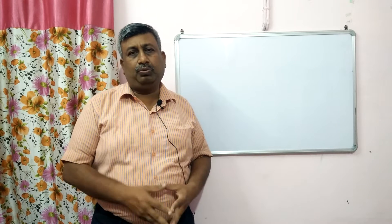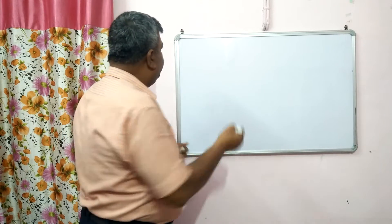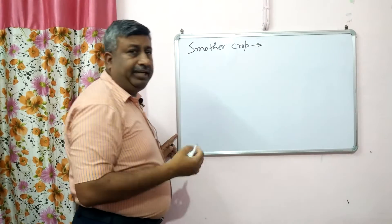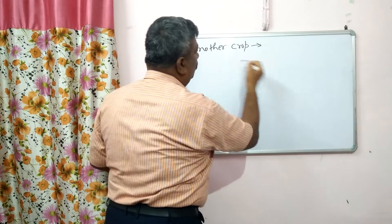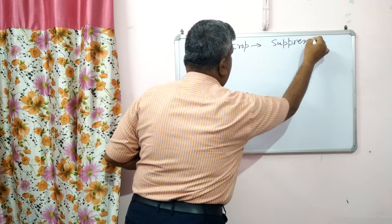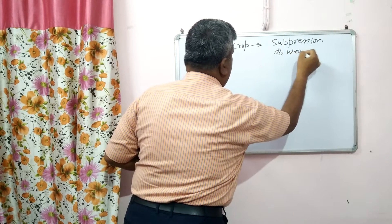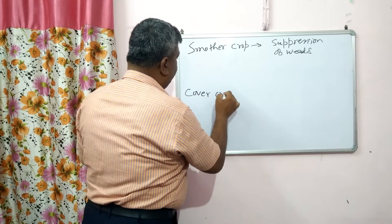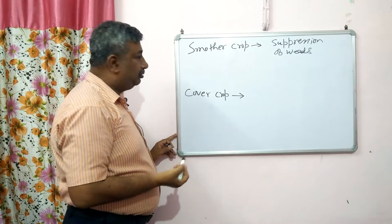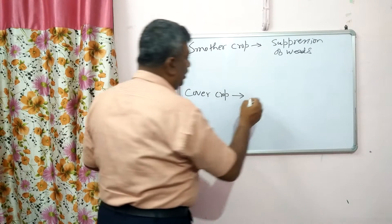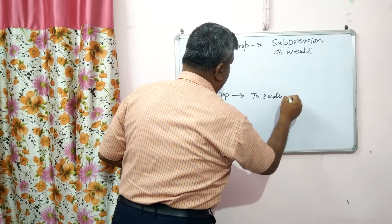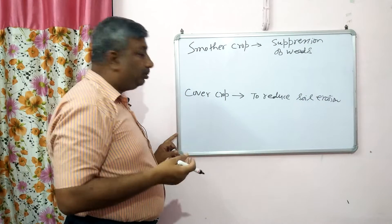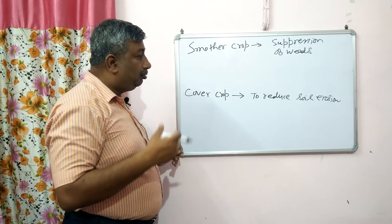The basic difference between these two crops: when we talk about smother crop, the objective is to reduce or suppress the weed growth. These crops are grown to reduce weed growth. While the cover crop objective is to reduce soil erosion — they cover the soil and reduce soil erosion. This is the basic difference between the two crops.